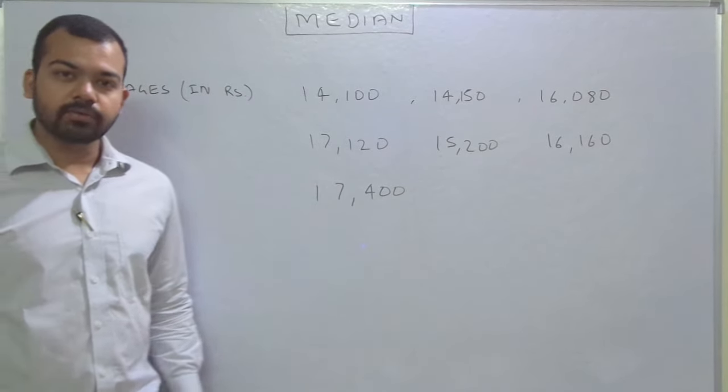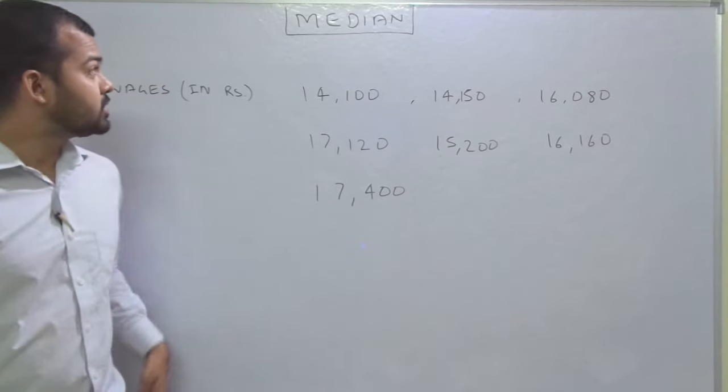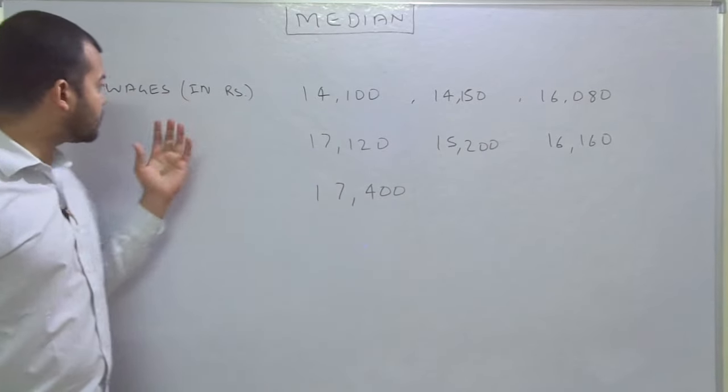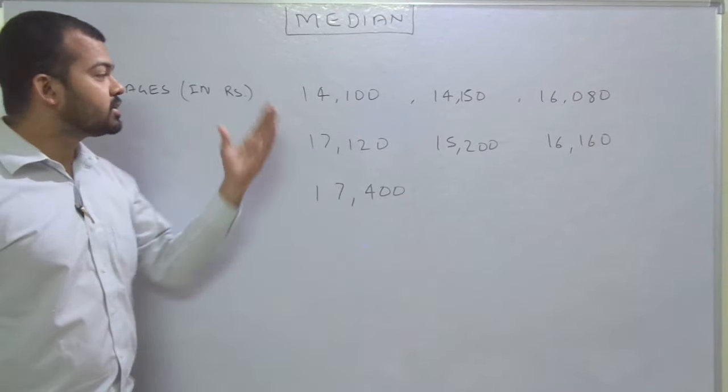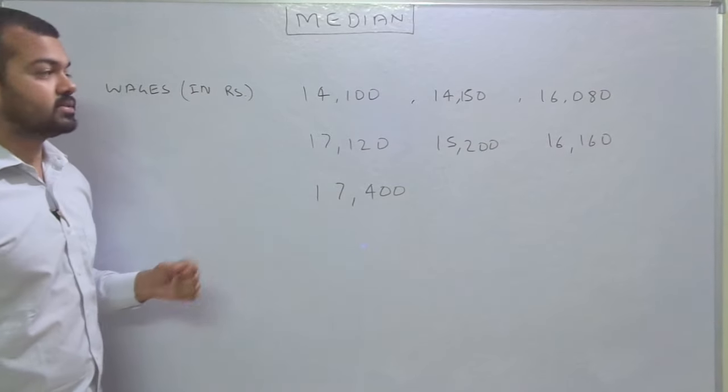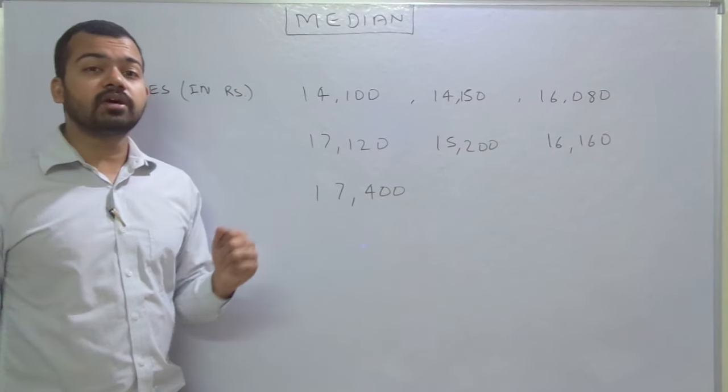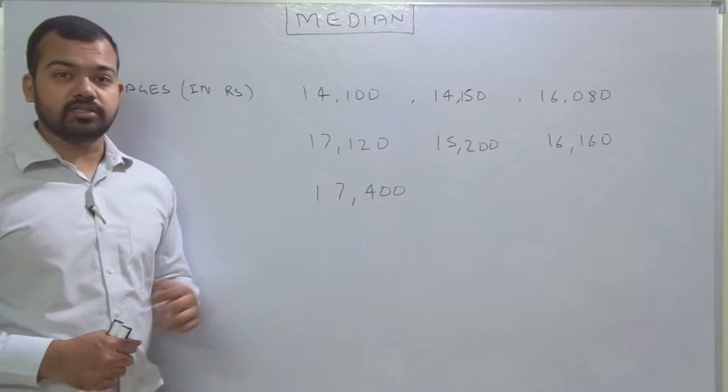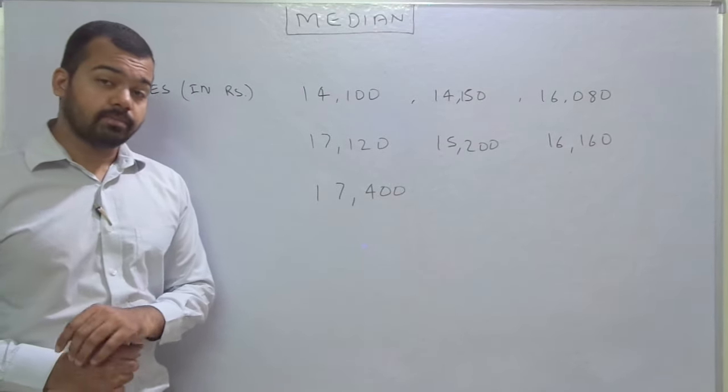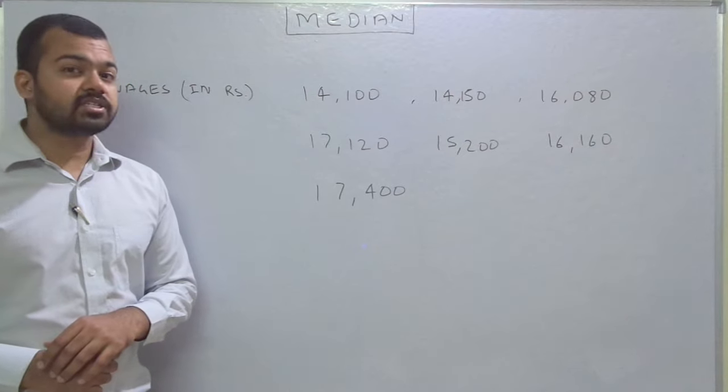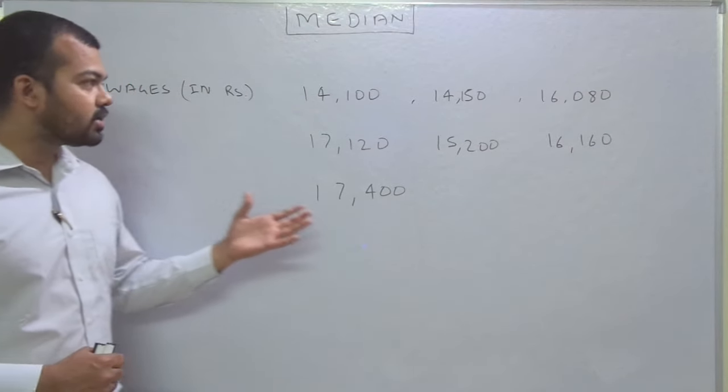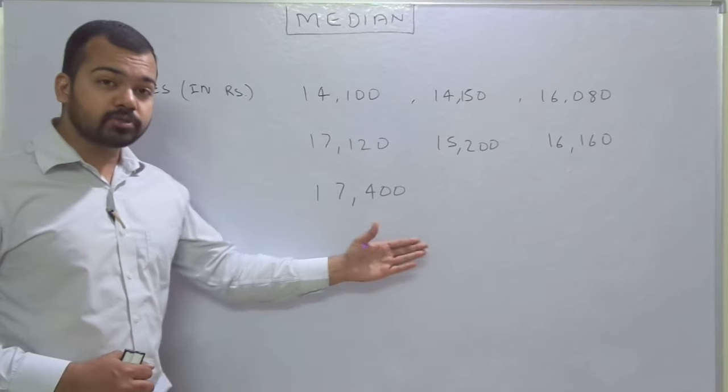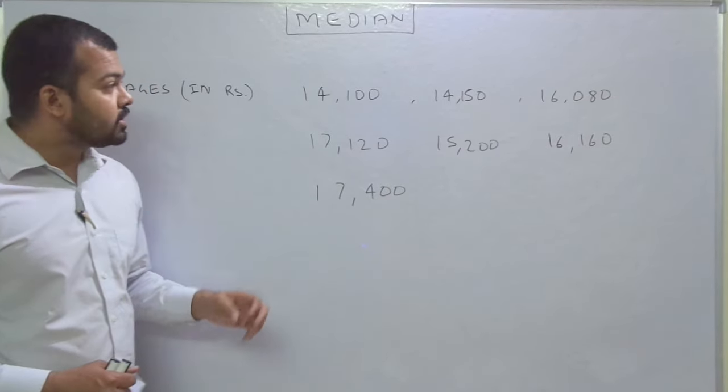Welcome to this video about median. We'll solve this individual series question. These are all figures of wages in rupees. First of all, we need to learn how to calculate median from an individual series. Median is very simple because it is known as a positional average. It means we don't have to calculate all the data; we just have to look at the position that is in between. So first of all, you need to arrange the data into ascending or descending order.